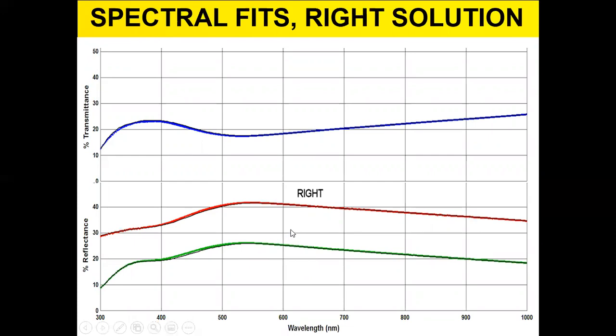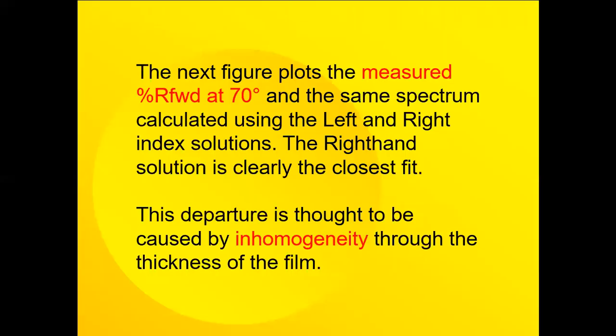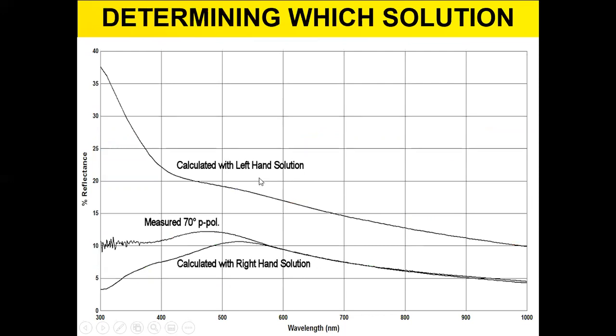But it's unclear which one is the correct answer until we take an additional spectral curve, such as the 70 degrees in the P polarization. And here are those plots. So the measured P polarization is seen clearly here, and the right hand solution and that match quite nicely here, whereas the left hand solution is nowhere close to the measured 70 degree polarization. So this determines which one is correct.